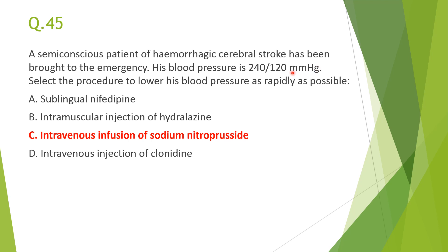Next: a semi-conscious patient of hemorrhagic cerebral stroke with blood pressure 240/120 — the procedure to lower BP rapidly is C, intravenous infusion of sodium nitroprusside. Sodium nitroprusside is rapidly acting and drastically reduces blood pressure by causing both venodilatation and arterial dilatation. Nifedipine increases paradoxical frequency of myocardial infarction; hydralazine and clonidine take too long.